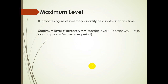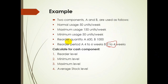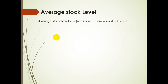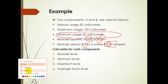Next is the maximum level. The formula is: Maximum Level = Reorder Level + Reorder Quantity − (Minimum Consumption × Minimum Reorder Period). ROL for A is 900, reorder quantity for A is 600, minimum consumption is 50 units, and minimum reorder period for A is 4 weeks; for B the minimum period is 2 weeks.